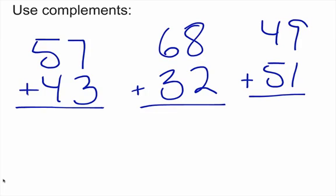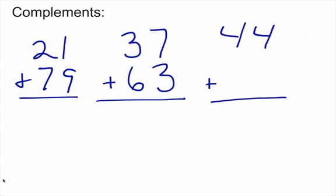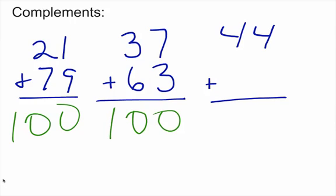If we understand what two-digit number plus another two-digit number will equal 100: 57 plus 43 equals 100; 68 plus 32 equals 100; 49 plus 51 equals 100. Let's look at some more complements: 21 plus 79 equals 100; 37 plus 63 equals 100. Now practice on this one — what is 44 plus what will give you 100?